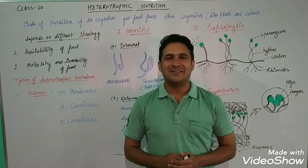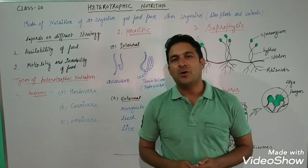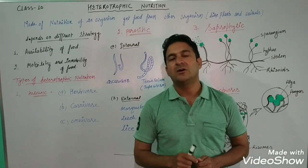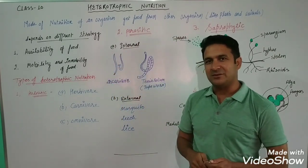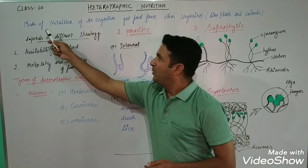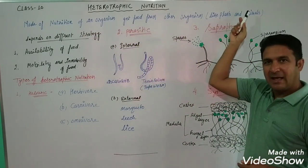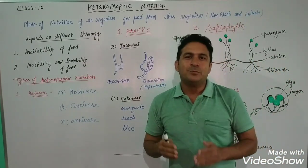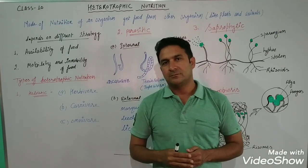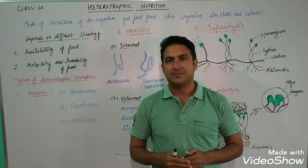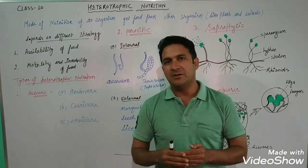Hello class 10, today we will discuss a very important topic: heterotrophic nutrition. Before this topic, I taught you about the autotrophic mode of nutrition, in which I taught you about plants and the photosynthesis process. Now we will discuss heterotrophic nutrition. The definition: the mode of nutrition of an organism that gets food from other organisms like plants and animals. In this mode, organisms depend on other organisms for food.